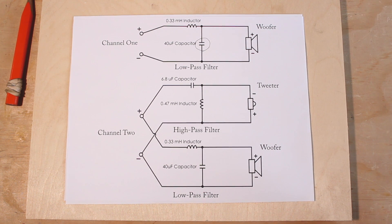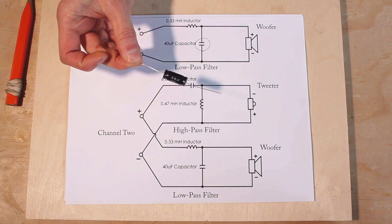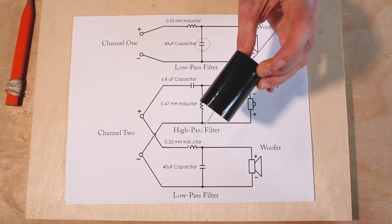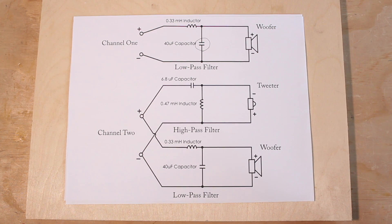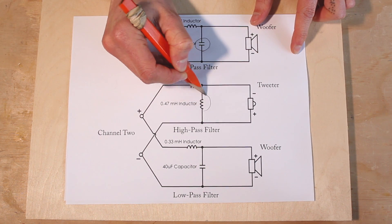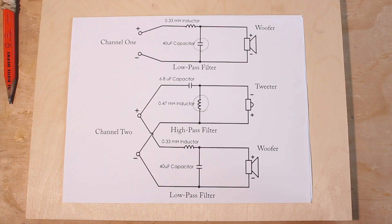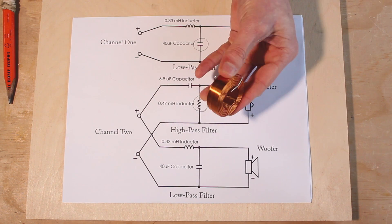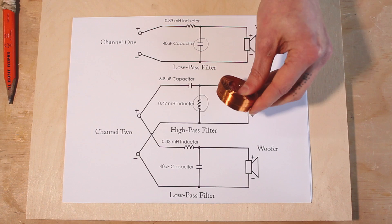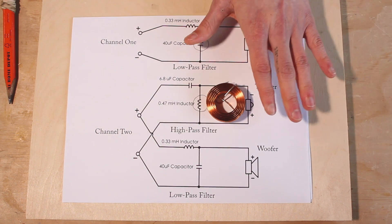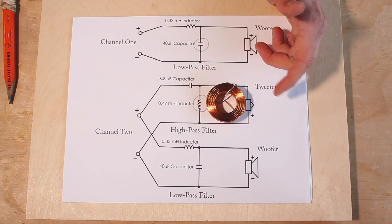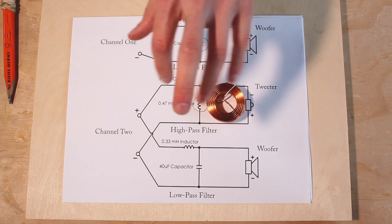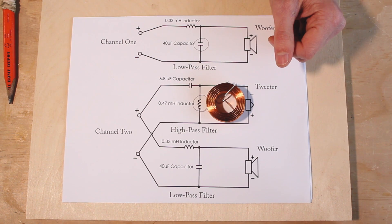Capacitors come in all sorts of values and sizes, anything from this little guy all the way up to big guys like this. The symbol for an inductor is this little squiggly line right here. An air core inductor looks like this. There are also copper foil inductors as well as solid core inductors — I don't have either of those with me today, but I encourage you to Google them if you want to find out more information.